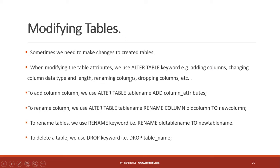For instance, to add a new column, we use ALTER TABLE and then specify the table name — for example, ALTER TABLE employees. We use the ADD keyword followed by the column attributes: the column name, the data type, and the number of characters. So whenever we need to add a column, just say ALTER TABLE, then the table name, then ADD the column.